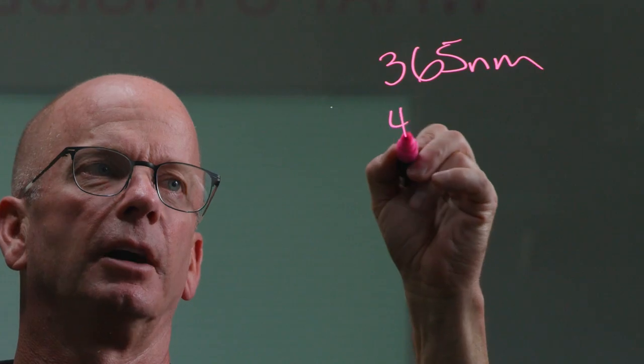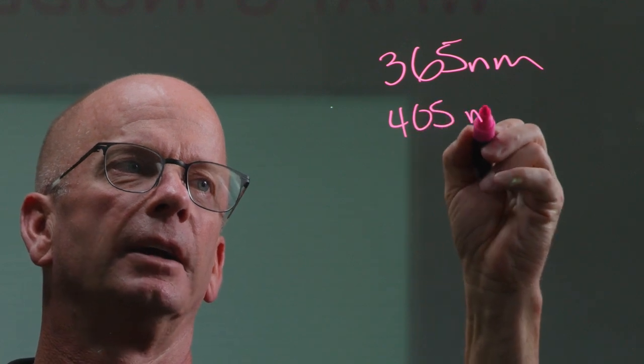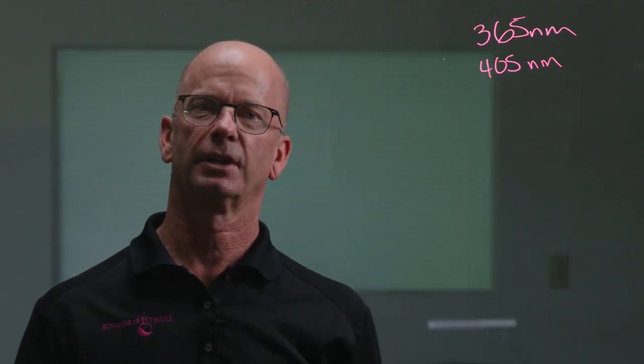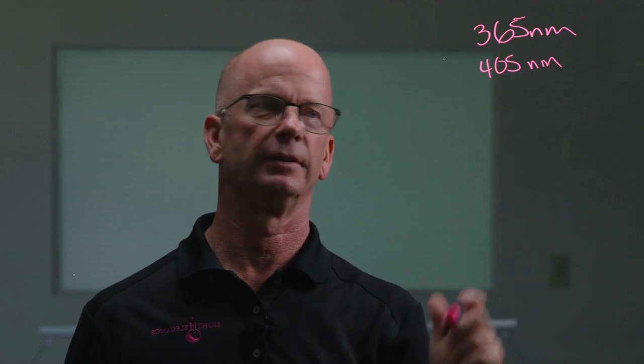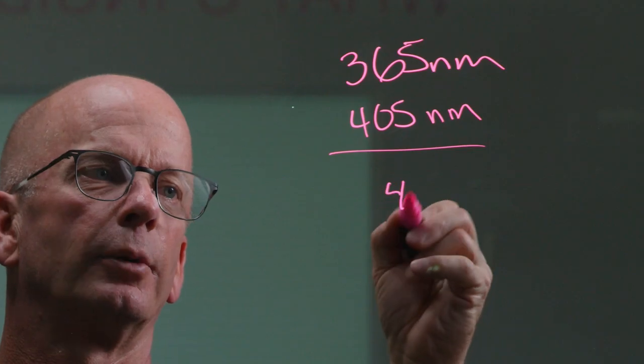So we're looking at a lot of the lights right now are 365 nanometers. And some of those LEDs also go up to 405 nanometers. And in those cases, here what we have is a difference of 40 nanometers.